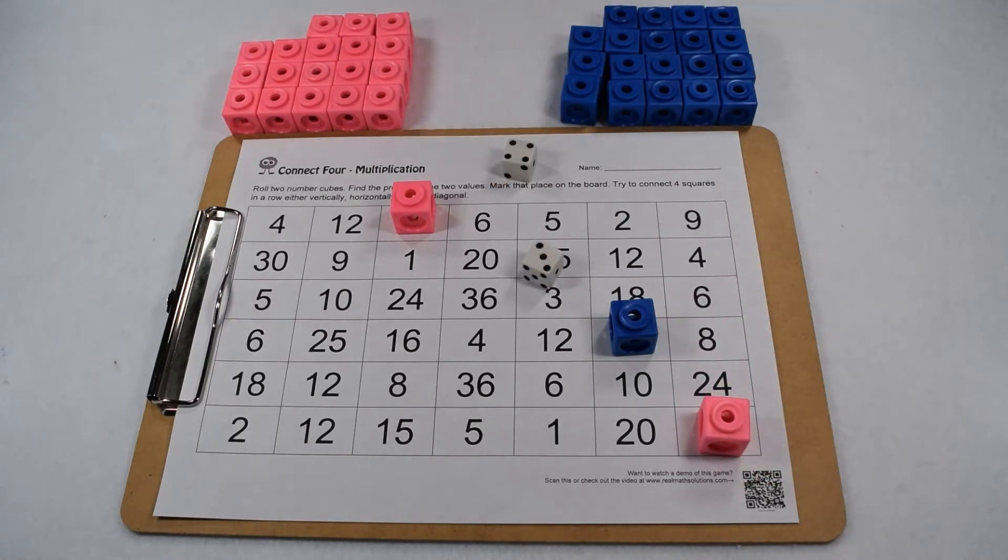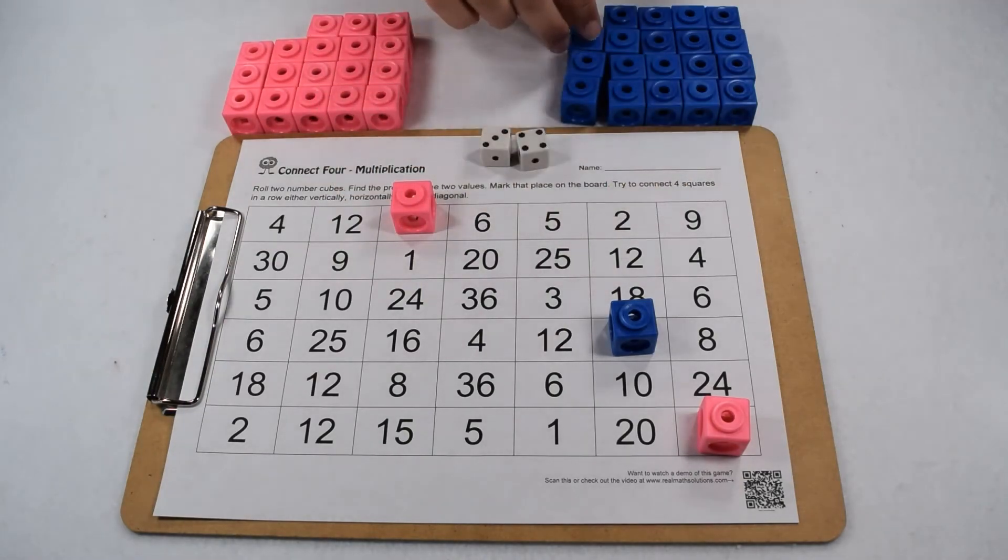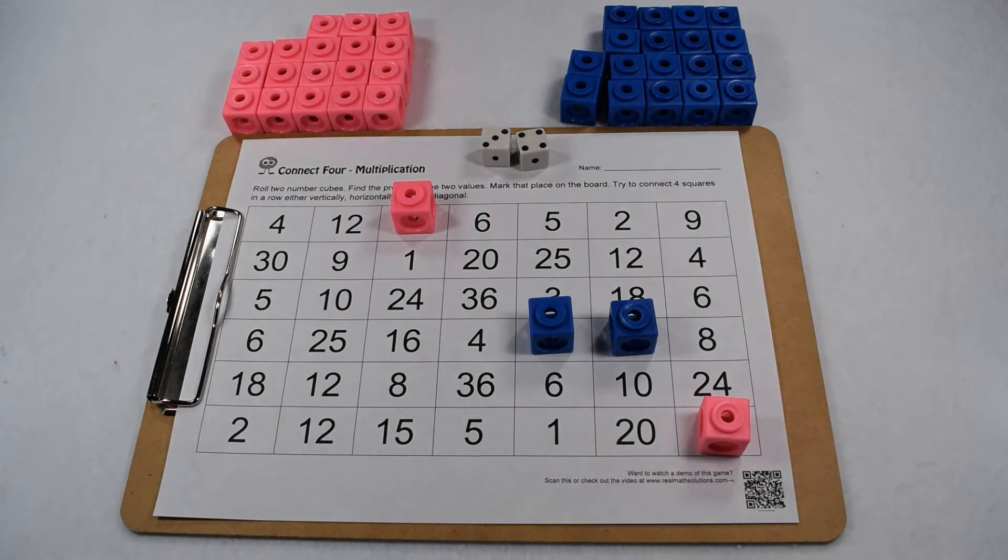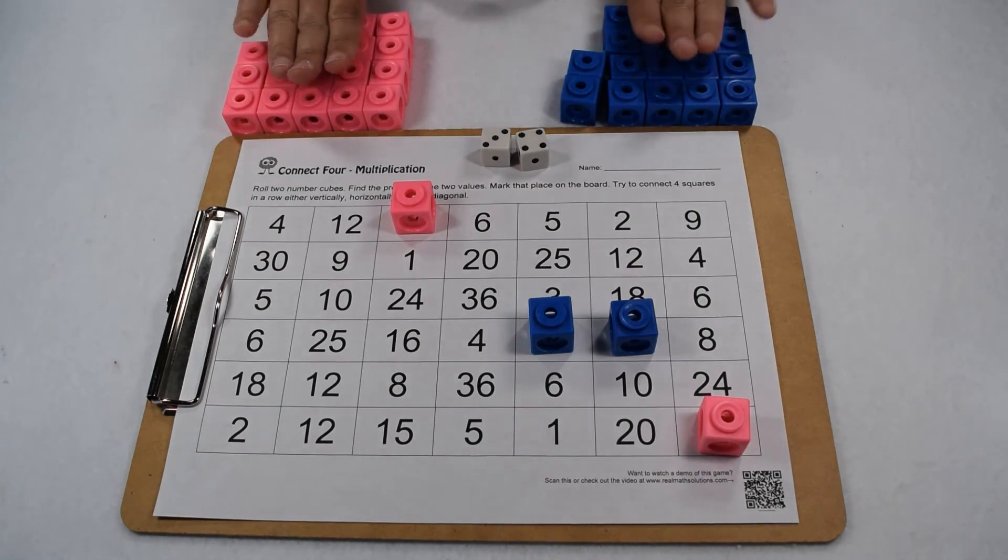It's now player two's turn again. When they roll, they get a four and a three. Four times three is 12, so they're going to take one of their blue markers and put it on the board. From here, play is going to continue back and forth between player one and player two.